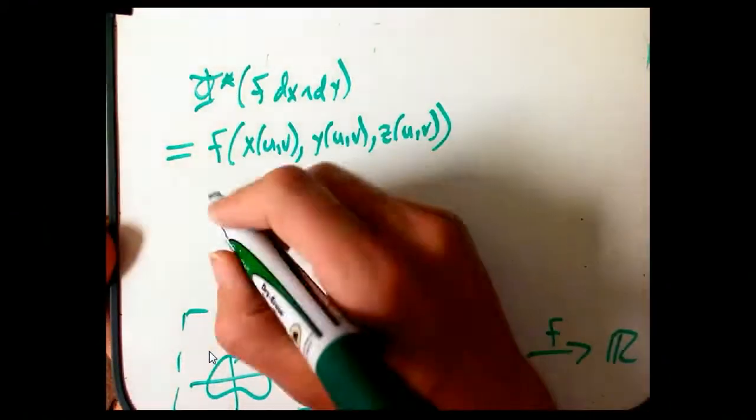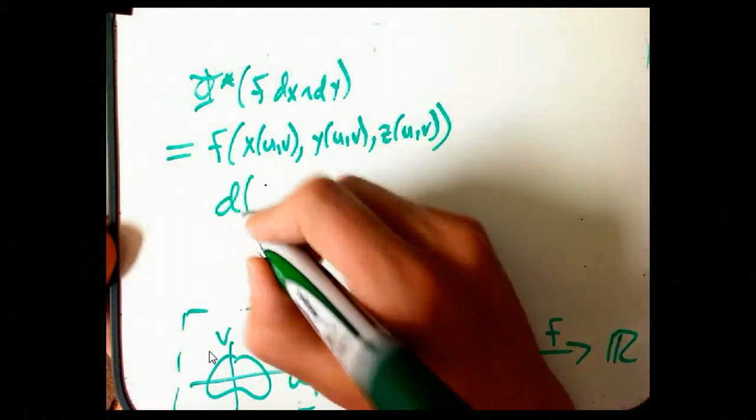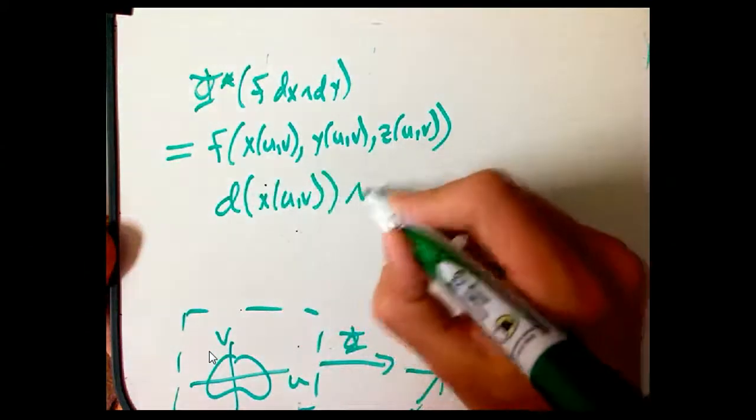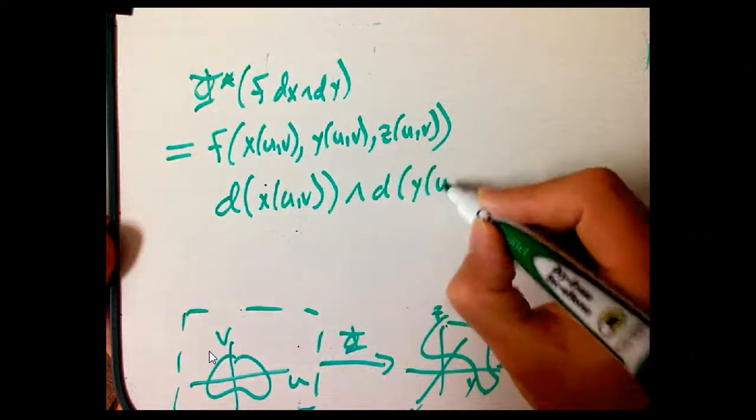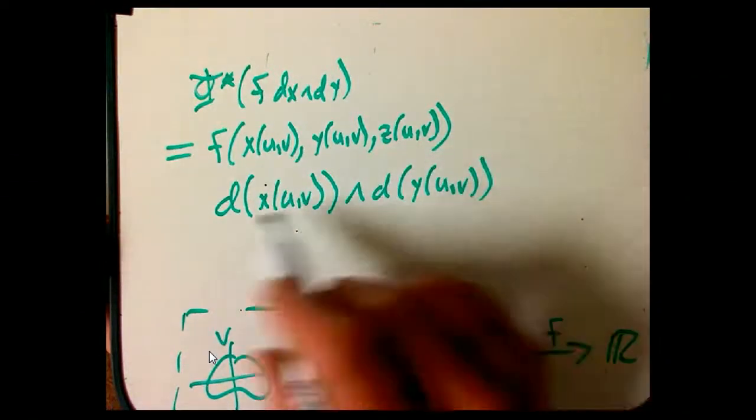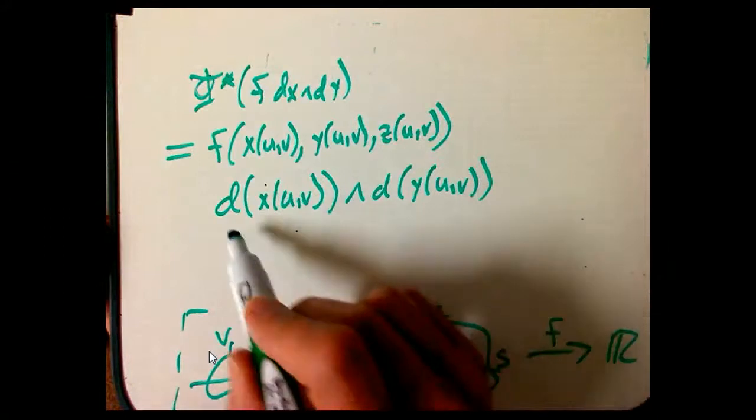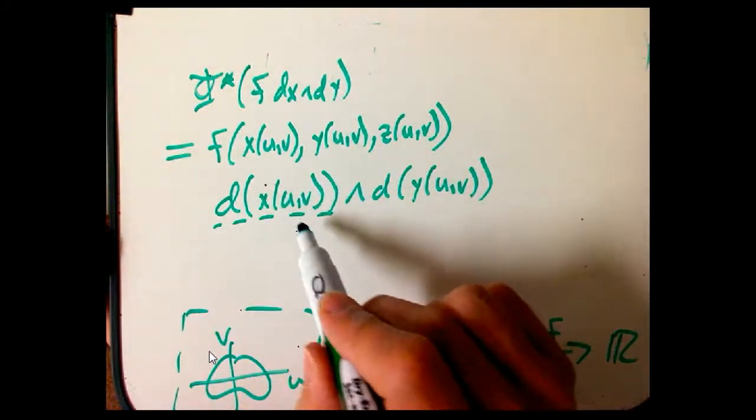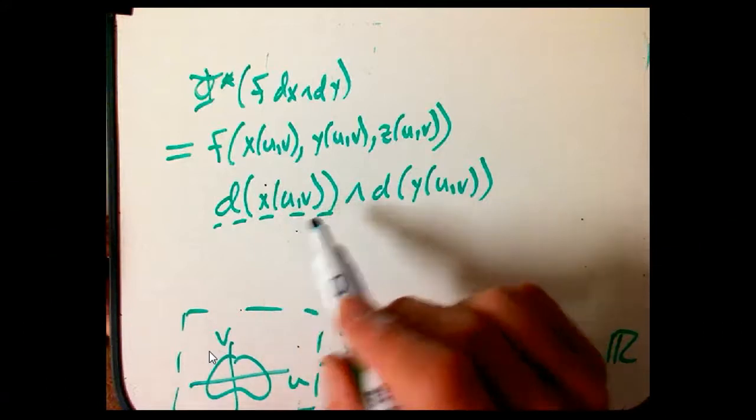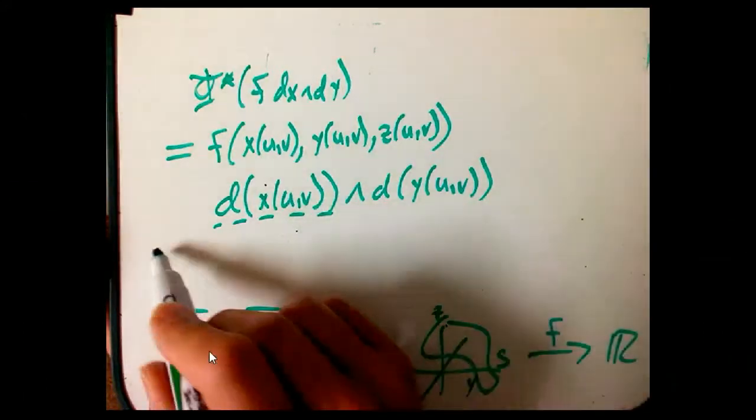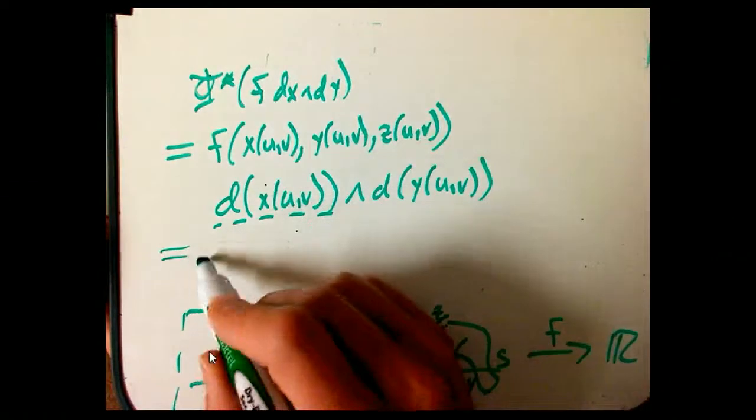And then times d of x of u,v wedge d of y of u,v. So again, these are interesting functions. And that tells us the way, the next thing we need to do. We've got d of a function. It's not just dx or dy. Those are pretty boring and we could probably figure out what to do with those if we want to integrate them. But we need to go one more step here to figure out what that is.